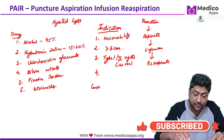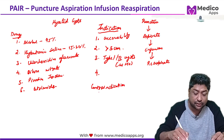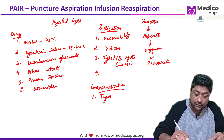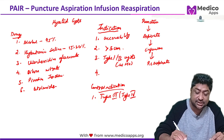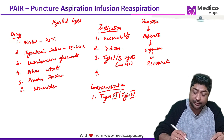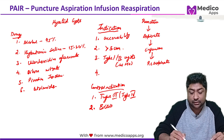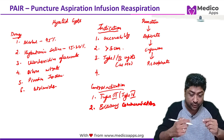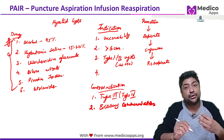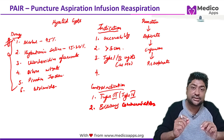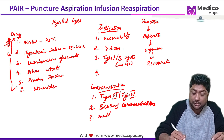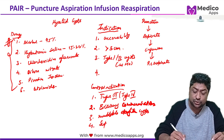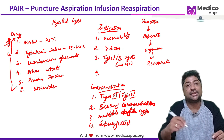The contraindications for PAIR are: type 3 and type 4 cysts which have multiple septations should not be treated with PAIR. Any cyst with biliary communication should not be treated with PAIR because the scolecidal agents can cause a huge biliary reaction. Any cyst with multiple daughter cysts reduces efficacy, and any cyst that is superinfected should also not be treated with PAIR.